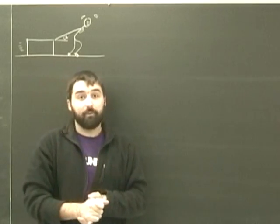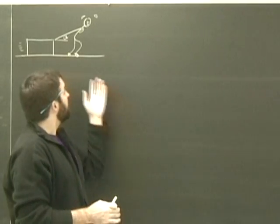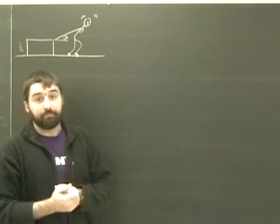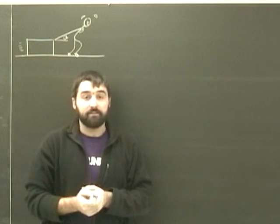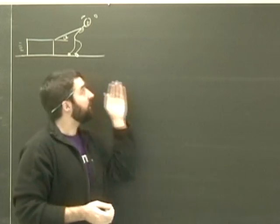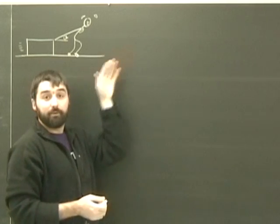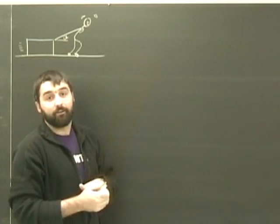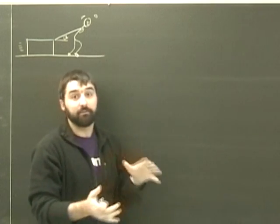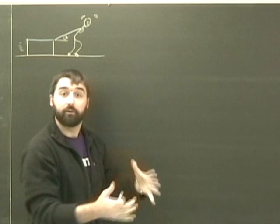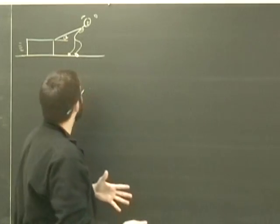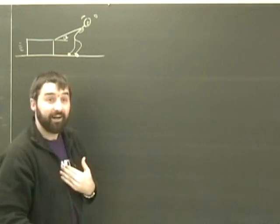Alright, we're going to try another free body diagram. Again, it's the person pulling a box, but this time they're taller. They're going to be pulling the box up at an angle, so it'll be a little bit different, but we're going to go through the exact same process.